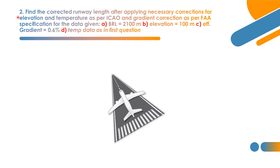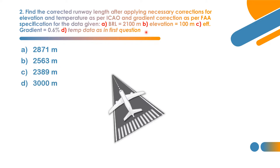The second question: find the corrected runway length after applying corrections for elevation and temperature as per ICAO, and gradient correction as per FAA (Federal Aviation Administration). Given data: basic runway length = 2100 m, elevation = 100 m, effective gradient = 0.6%, and ART = 33.62 degrees Celsius from question one. Options are: A) 2871 m, B) 2563 m, C) 2389 m, D) 3000 m.